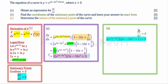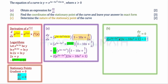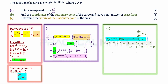Setting dy/dx equal to zero means setting the part A expression equal to zero. We note that e to the power of 3x minus 5x squared is an exponential function and cannot equal zero — y equals zero is an asymptote — so we reject that factor. We are left with the remaining bracket, which factorizes to give 2x minus 1 multiplied by 5x plus 1 equals zero.